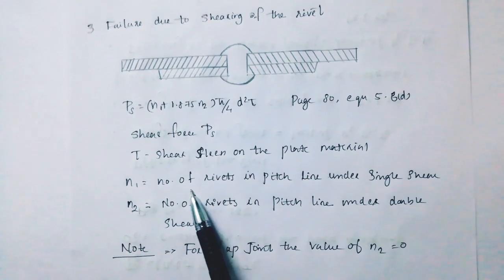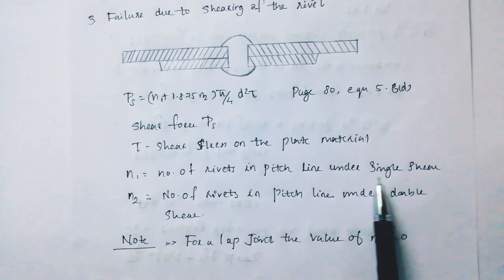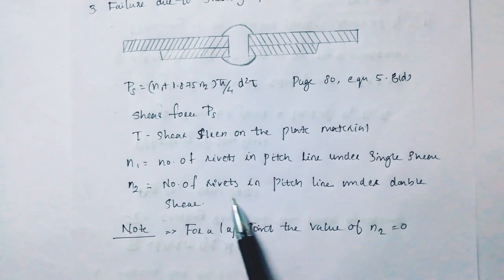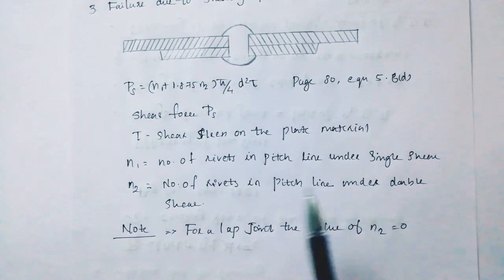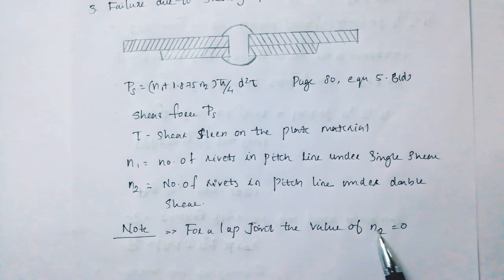n1 is the number of rivets in the pitch line under single shear. n2 is the number of rivets in the pitch line under double shear. Note that for a lap joint, the value of n2 is zero.